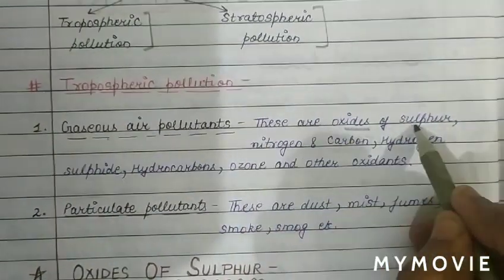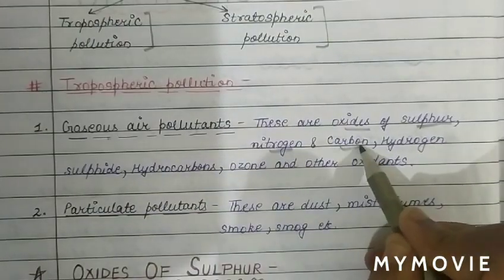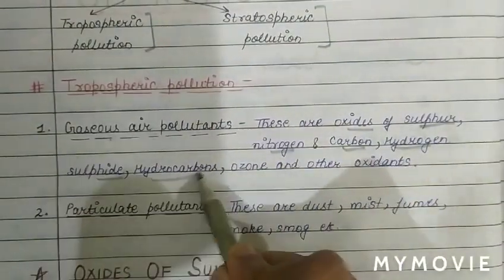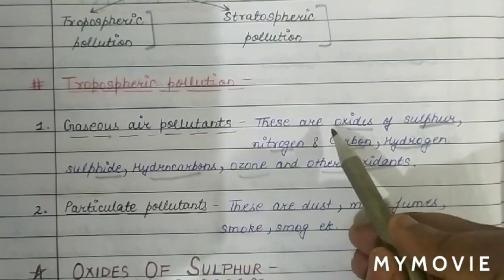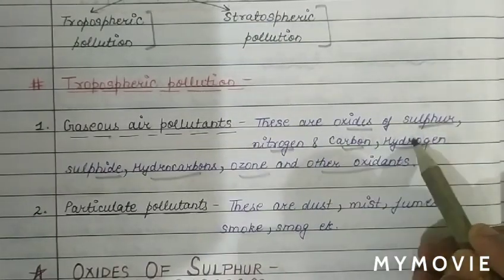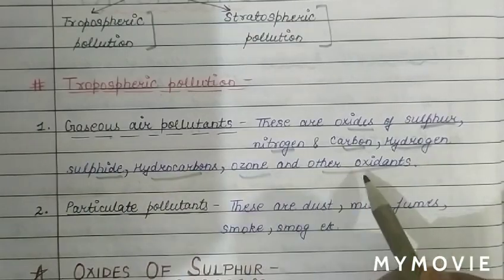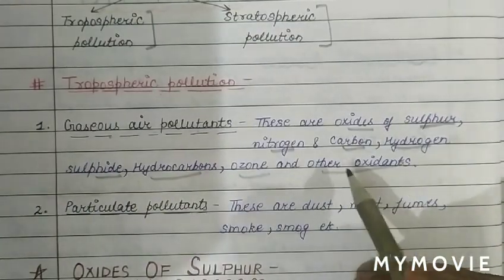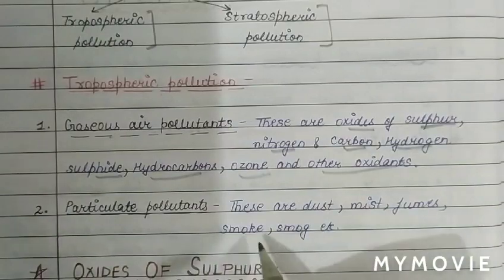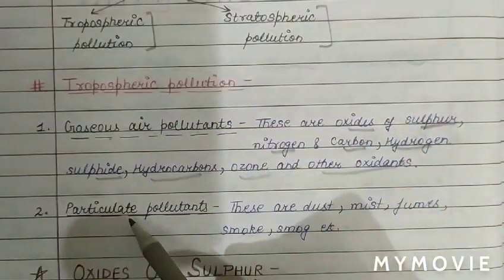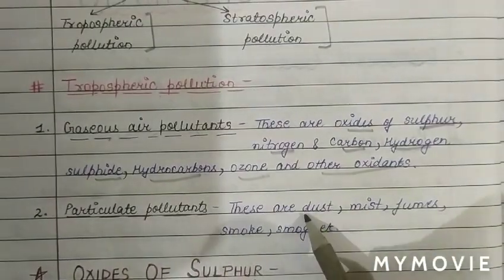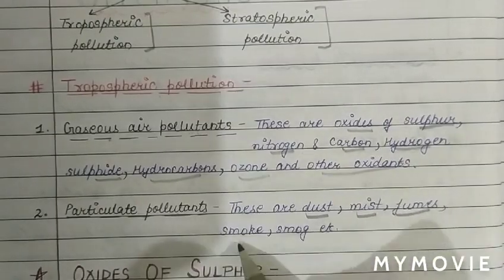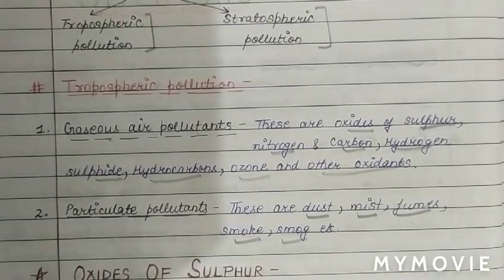Gaseous air pollutants include oxides of sulfur, nitrogen and carbon, hydrogen sulfide, hydrocarbon, ozone, and other oxidants. Particulate pollutants include dust, mist, fumes and smoke.